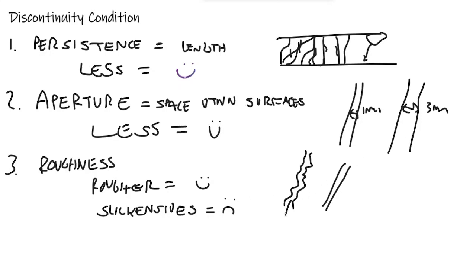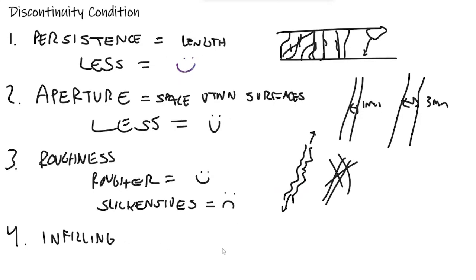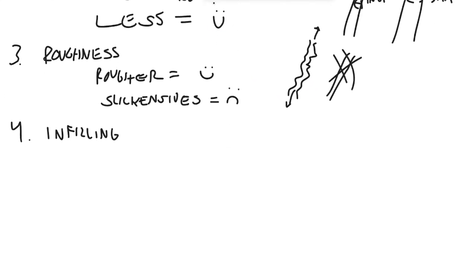The fourth piece we look at is infilling. That's going to be the material that is inside of your discontinuity. And generally speaking, we can kind of break this into two categories, the infilling itself. We can have hard stuff. This could be most types of mineralized infillings, calcitic, zeolites, maybe serpentinization, these kinds of things. And then there's soft, which is going to be a big umbrella of all your different clay varieties, kaolinite, etc. Soft clay gouges, kind of bad stuff.